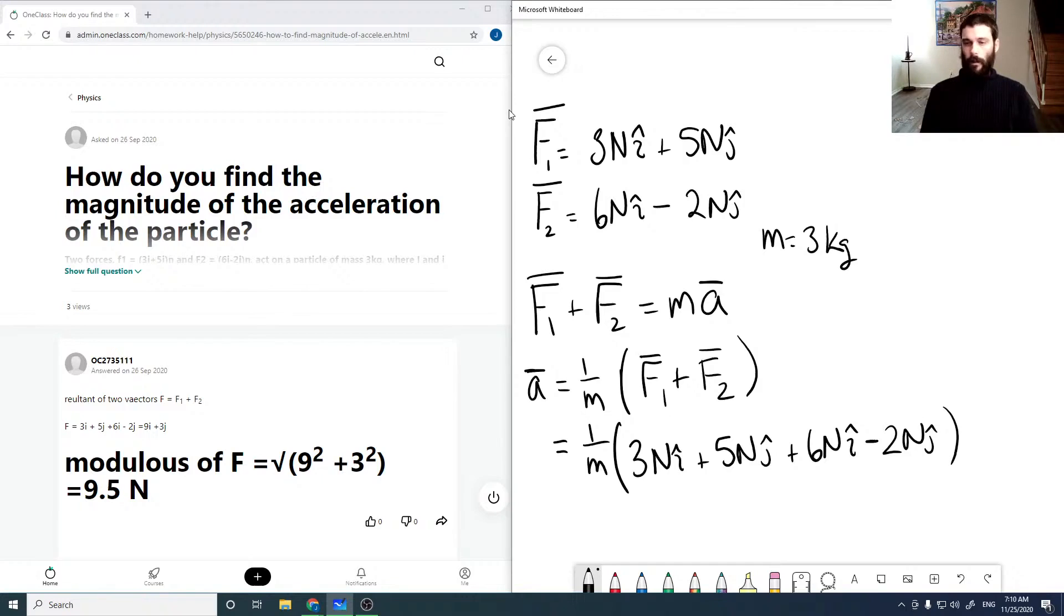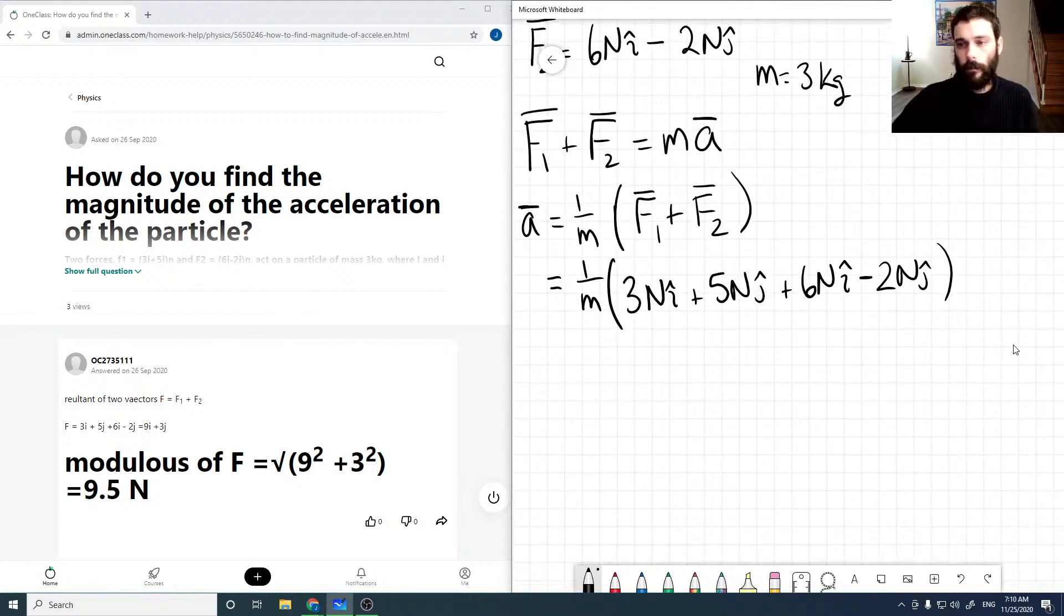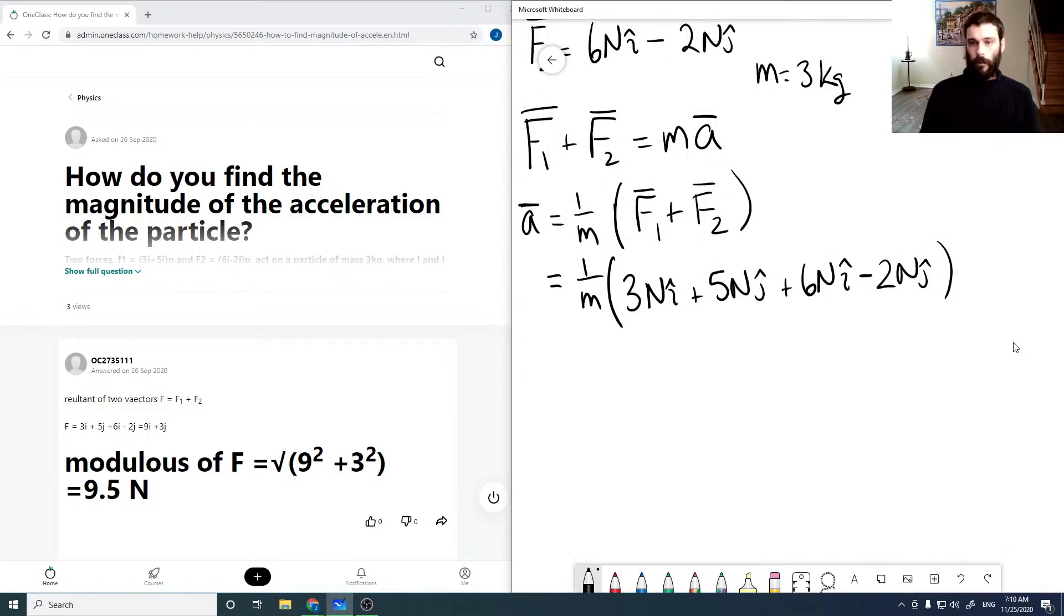So we can't mix our i's and j's, but we would sum the i's. So essentially we treat this just like any other variable problem where we have to keep the like variables together. So this would be 1 over m, 3 plus 6 is 9, and 5 minus 2 is 3. And I might as well put in the value of the mass at 3 kilograms there.